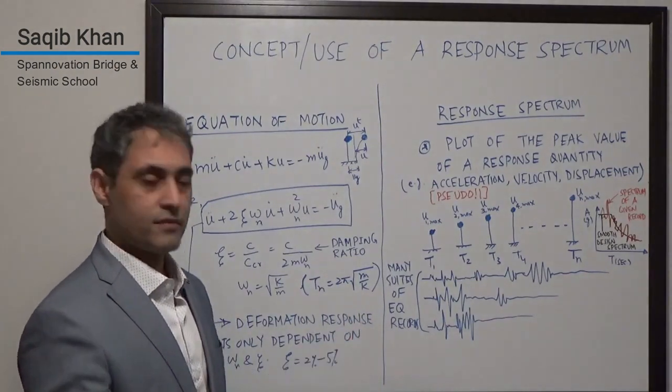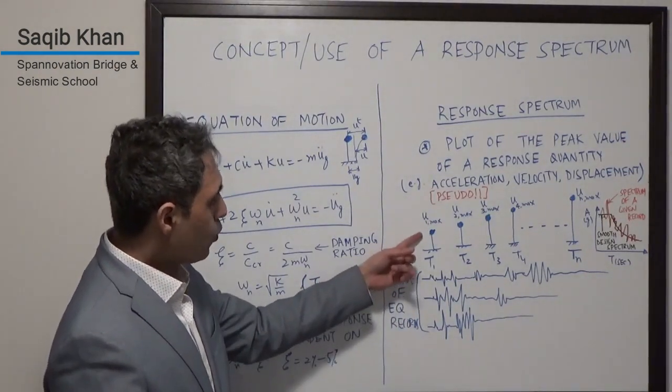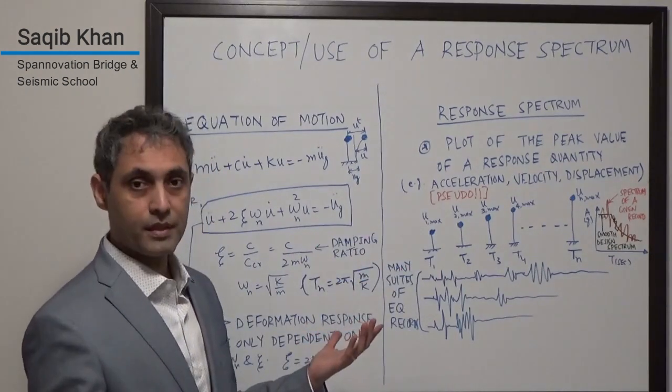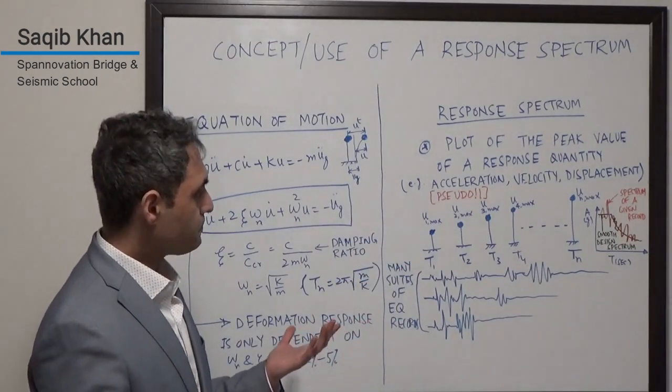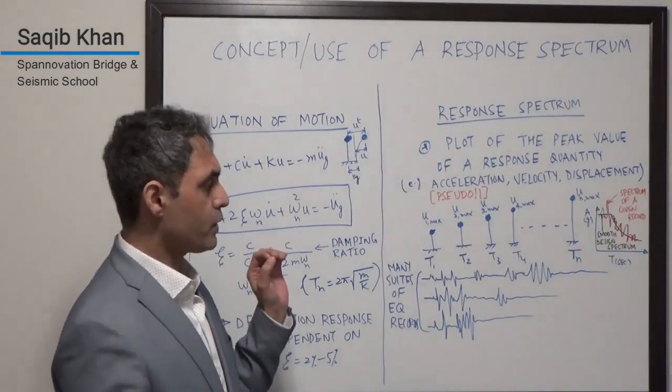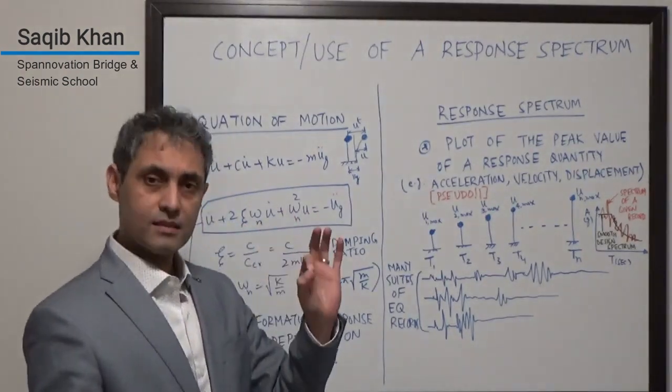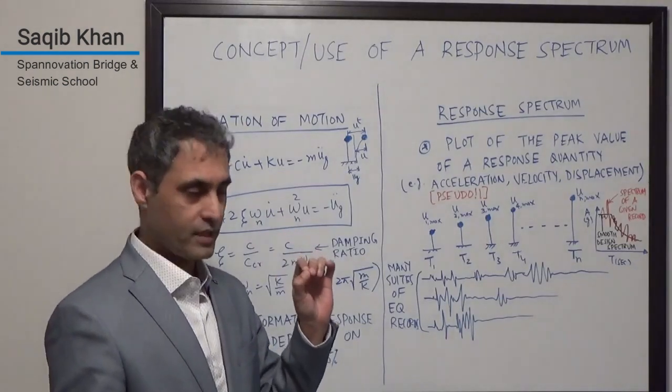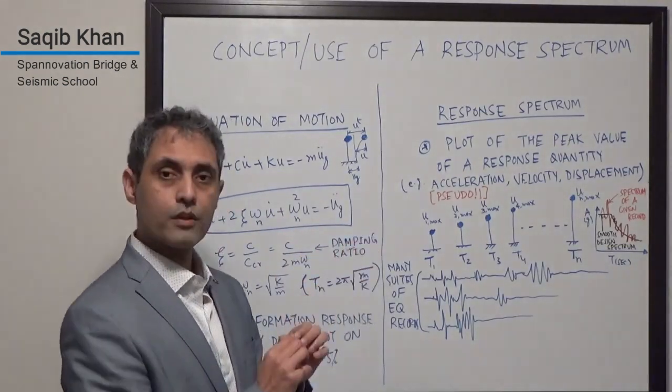There may be hundreds or thousands of records that we run this one system through. This system that has a certain natural period or natural frequency. And what we will do is we will find the maximum value, the maximum displacement value, for example, for that system. And we'll record it.